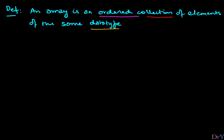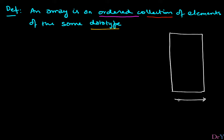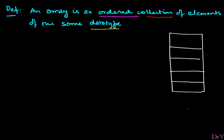Think of an array as a sequence of locations where each location has the same number of bits. We call this the precision. For example, if we have five elements — one, two, three, four, and five — each element has the same amount of space. Precision tells us how much space each element takes, expressed in bytes.